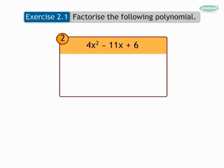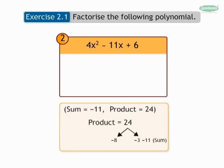Nothing can be taken in common, so split the middle term. Here our sum is minus 11 and product is 24. We split product 24 as minus 8 and minus 3.